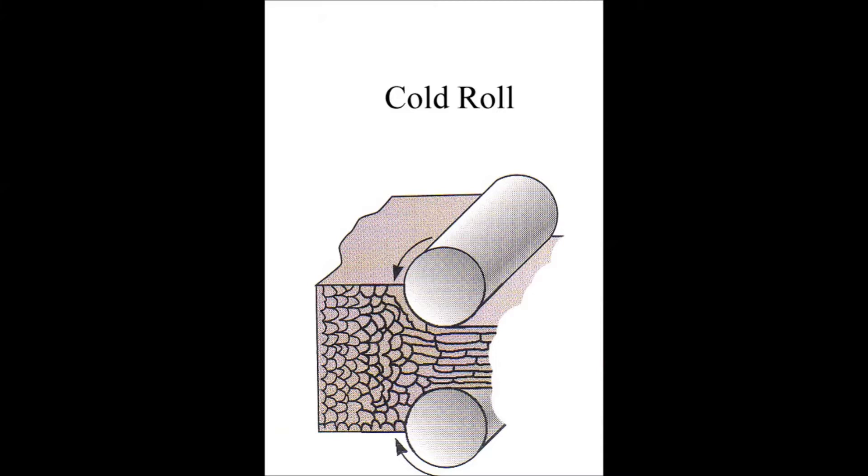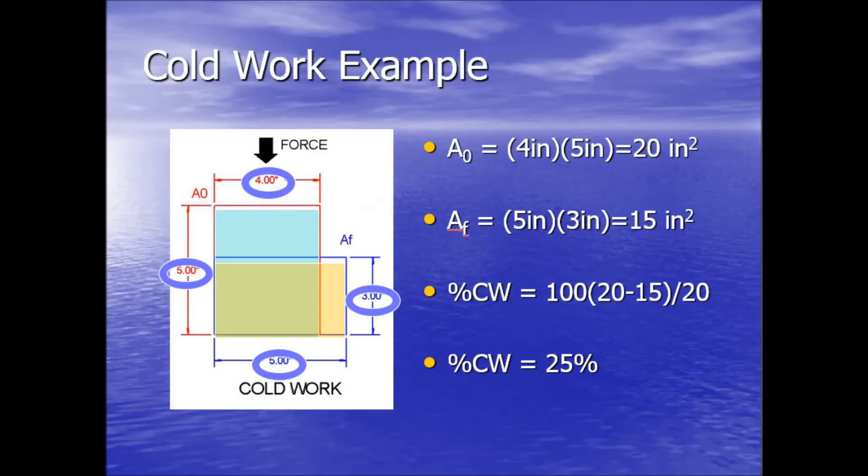Occurs when a material suffers plastic deformation, causing a change in the material's dimensions and the creation of new dislocation lines. These newly created dislocations interfere with each other, causing the material to become stronger and harder, but also more brittle.